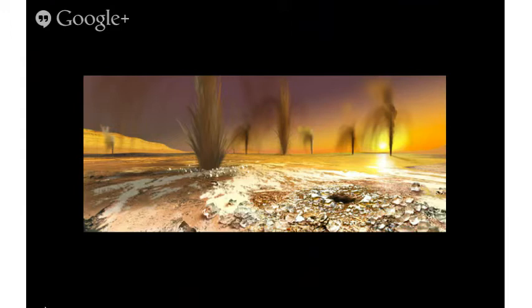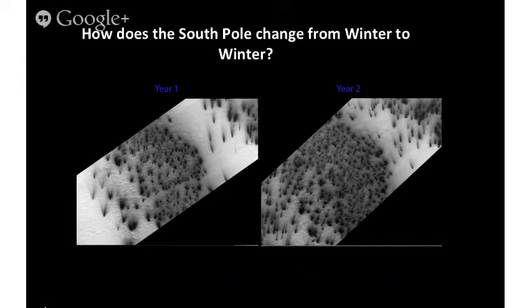We can learn about the climate if we monitor this. The Mars Reconnaissance Orbiter has been monitoring the South Pole for these events for about four Martian years now. The idea is that if we can compare one season to the next — there's a year-one image and a year-two image — you can see there are a lot more fans in year two than there were in year one.